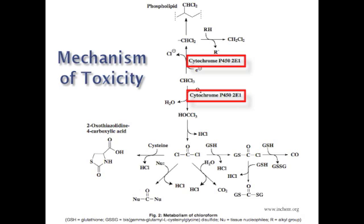The toxicity of chloroform on the kidney, liver, and other target organs is related to the tissue's ability to metabolize chloroform. Toxicity occurs in target tissues with the greatest ability to metabolize or bioactivate chloroform. The strength of toxicity can be increased by increasing agents responsible for increasing metabolic enzyme activity.